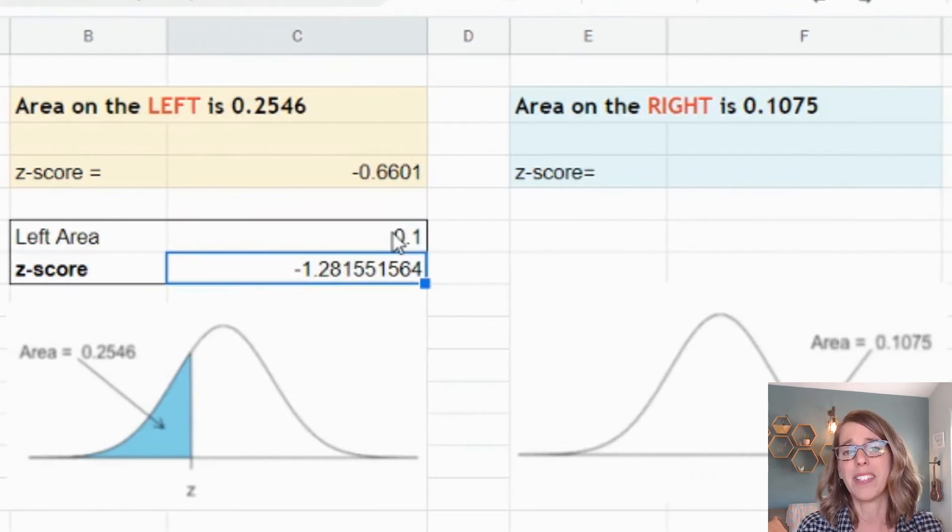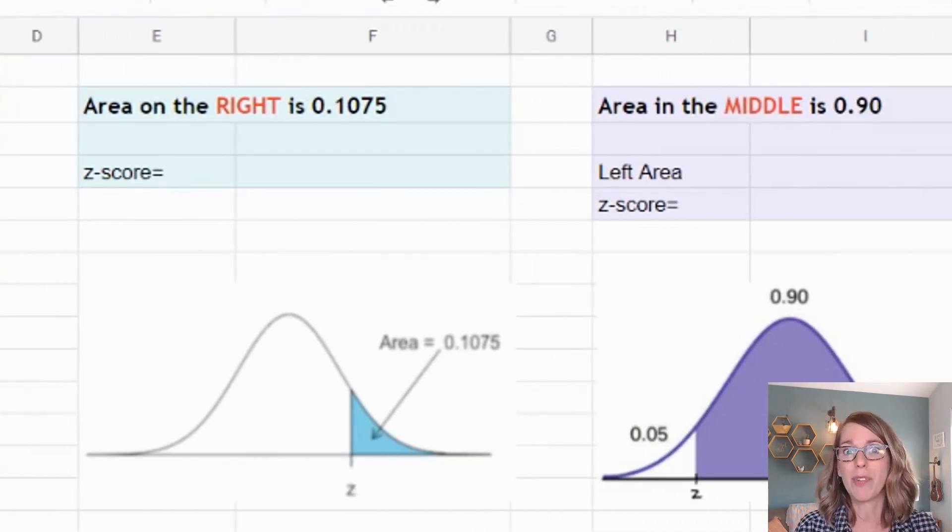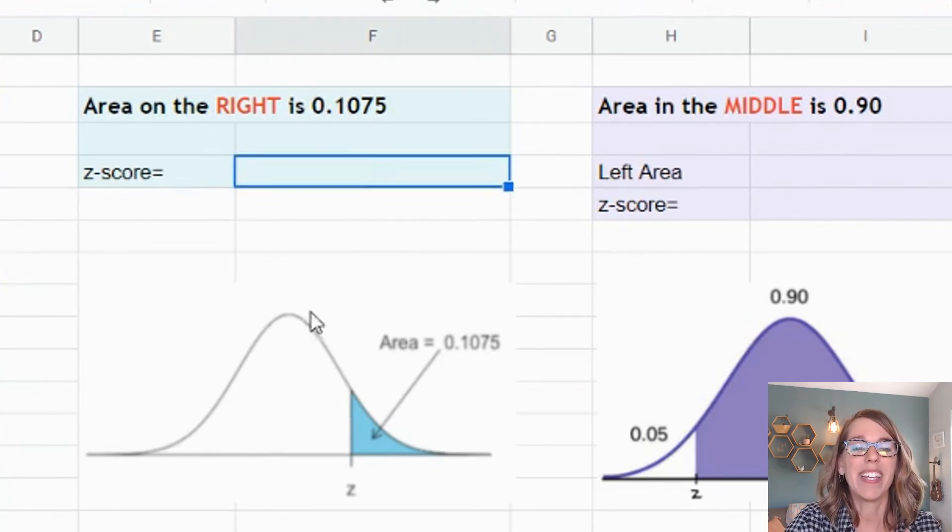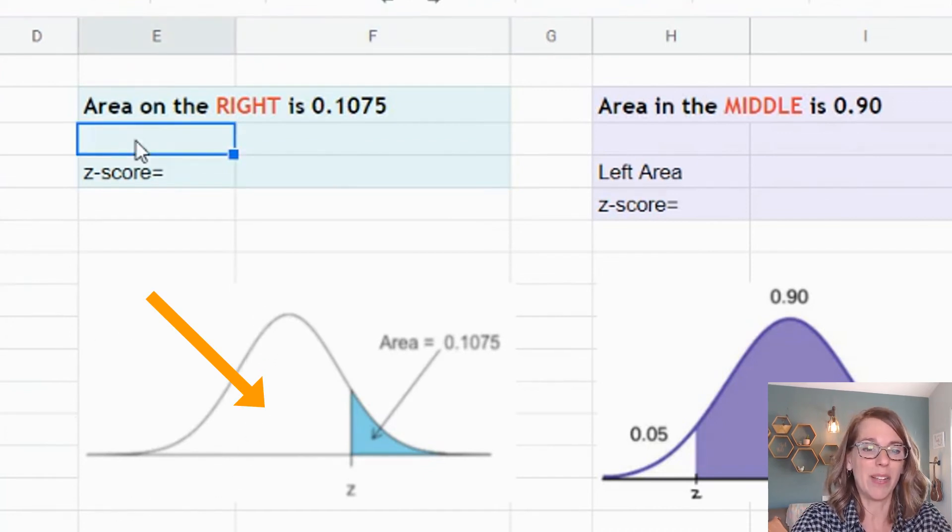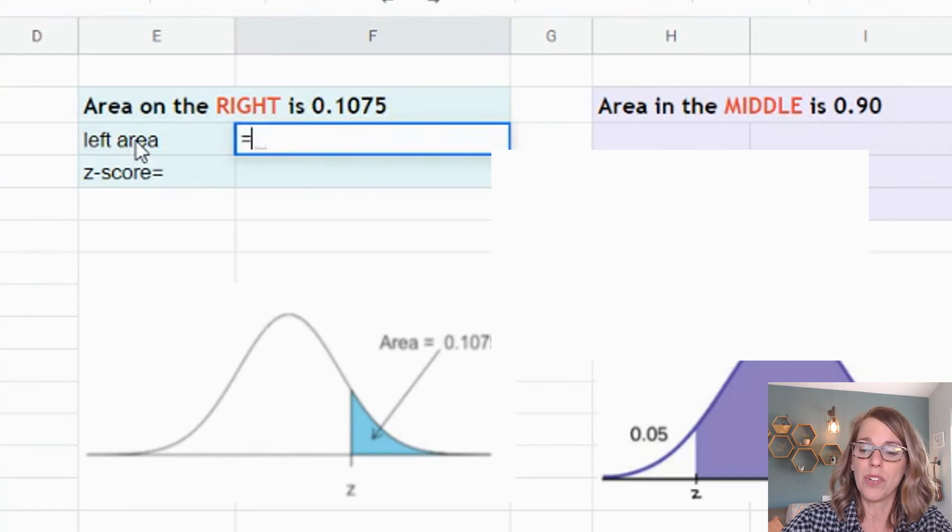But what if I'm instead working on the right-hand side? I can obviously use some symmetry here and just take the negative sign off, right? That would be a great way to go. Instead, I'm going to give it this area on the left. My left area is going to be everything that's in white there instead. So that's going to equal the entire area, one minus 0.1075.